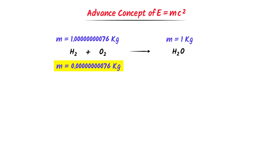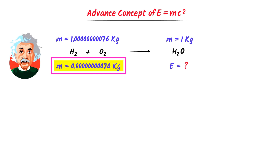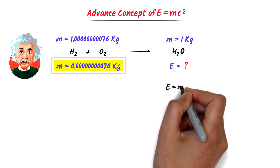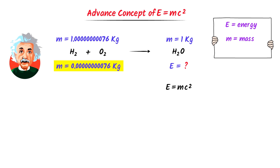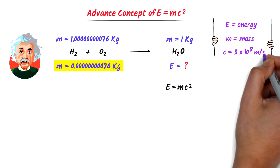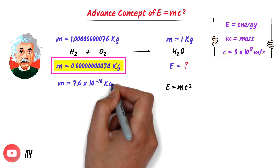Where is the 0.00000076 kg mass of the reactants? According to Einstein, this 0.00000076 kg mass is converted to energy. The second question is: how much energy is produced when this amount of mass is converted into energy? We use the equation E equals mc squared, where E is the energy released, m is the mass used, and c is the speed of light, which is 3 × 10⁸ meters per second. In scientific form, this mass can be written as 7.6 × 10⁻¹⁰ kg.